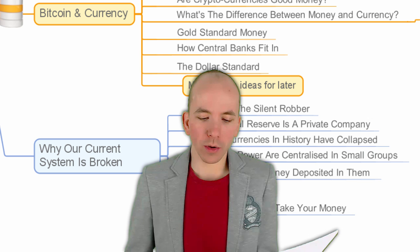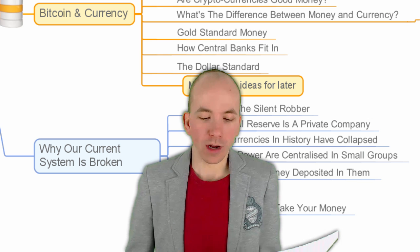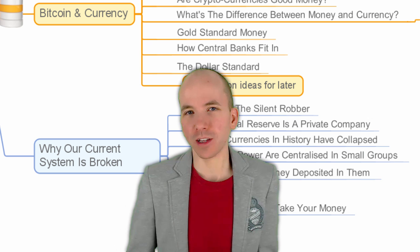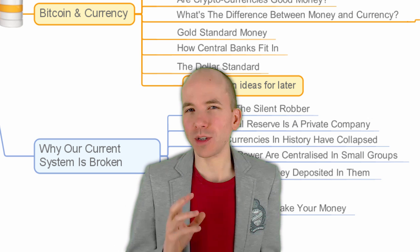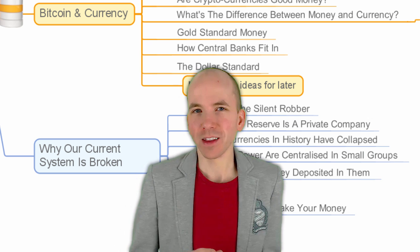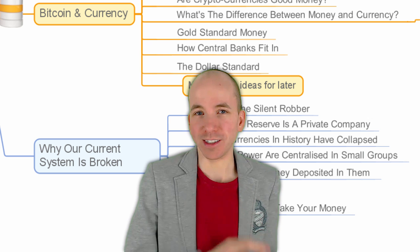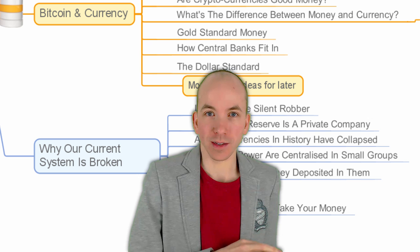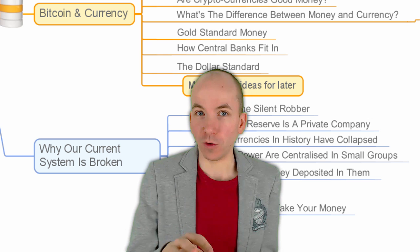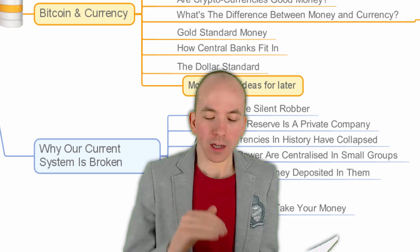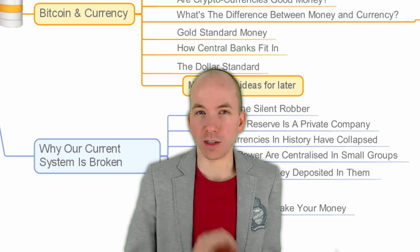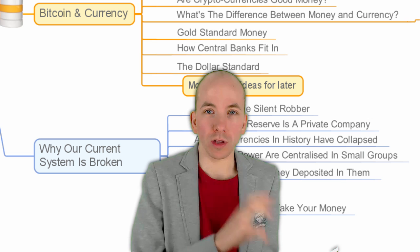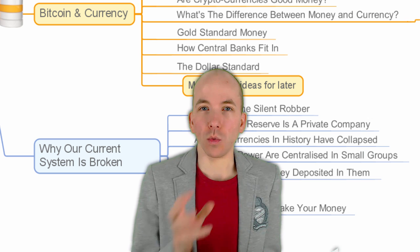Then we're going to go into module four, which I've called 'Why Our Current System Is Broken.' If we've got a digital money revolution, why do we need one? There must be a problem with the existing system — one that I believe most people are not even aware of, which is not good for them or for you. So I spell out in this module exactly why the current system is broken, so you can see how Bitcoin is a brilliant innovation potentially out of these problems.